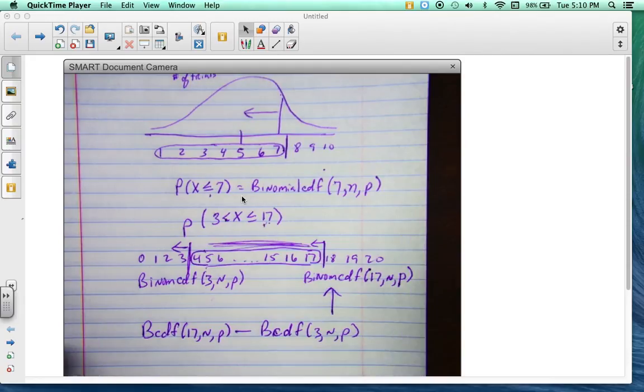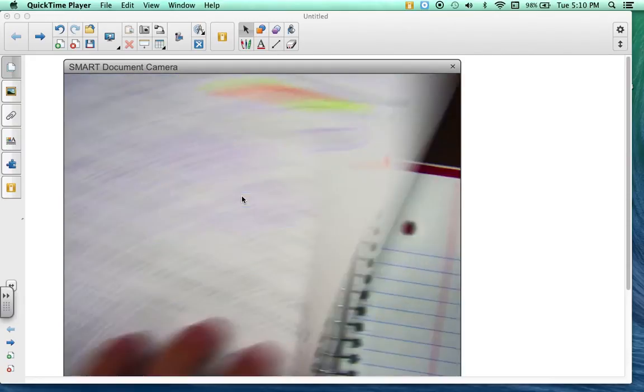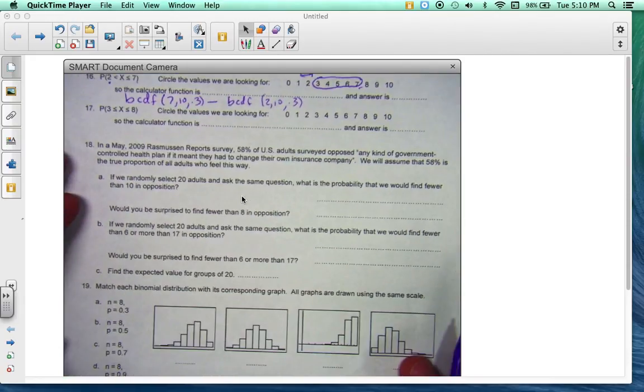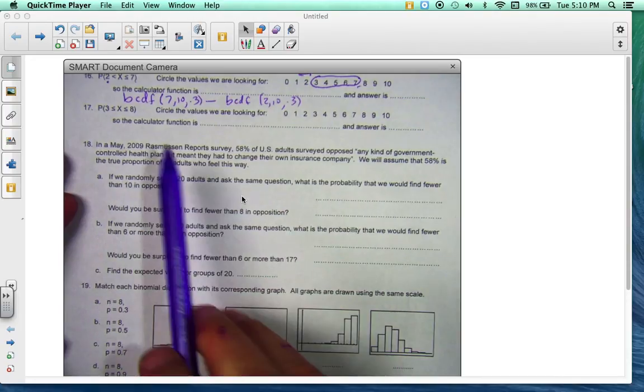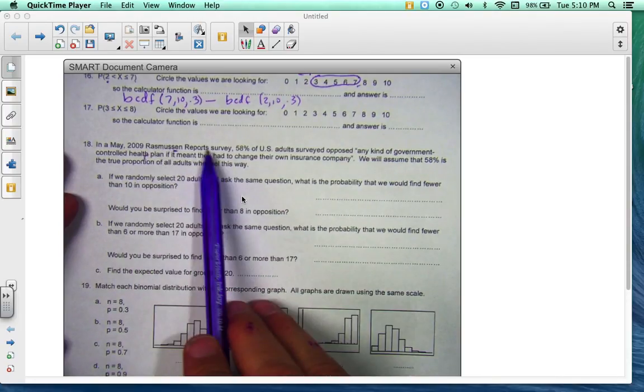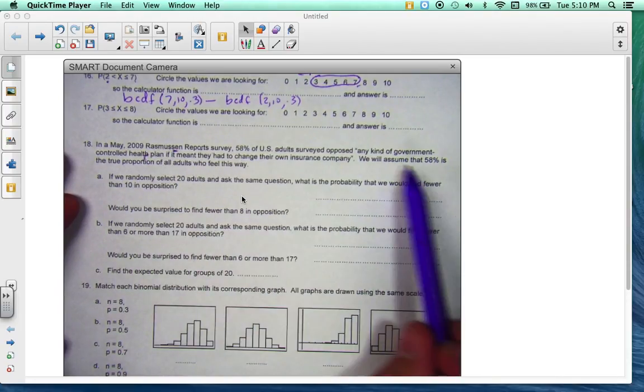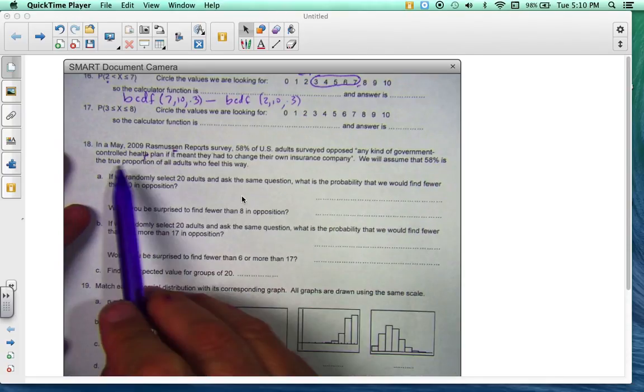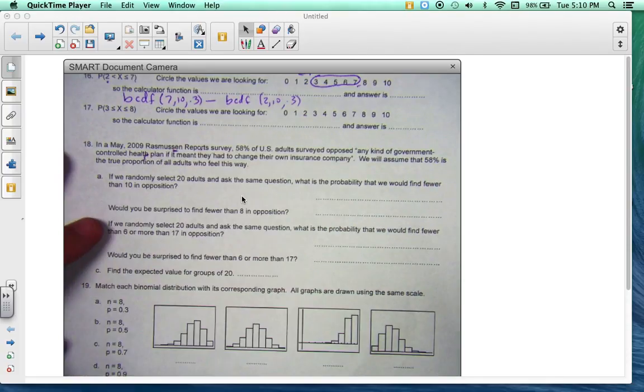All right, let me go over this worksheet here. This is number 18. In May 2009, Rasmussen Report surveyed 58%. We will assume that 58% is the true proportion, so this is our p. So p equals 0.58.